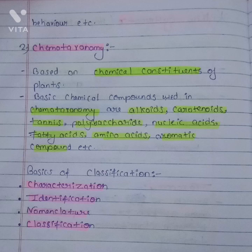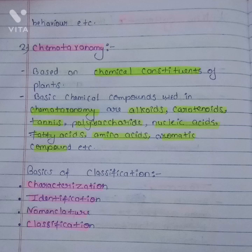Chemotaxonomy is based on the chemical constituents of plants. The basic chemical compounds used in chemotaxonomy are alkaloids, carotenoids, tannins, polysaccharides, nucleic acids, fatty acids, amino acids, and aromatic compounds. These are the compounds used in chemotaxonomy, also called chemical taxonomy.